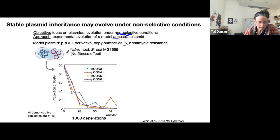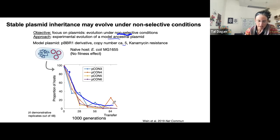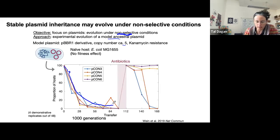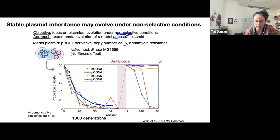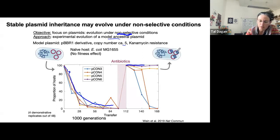We evolved it under non-selective conditions for plasmid presence; nonetheless, the plasmid was unstable and its frequency in the population was decreasing. But then when the PhD student back then, Tana Wine, exposed the population to antibiotics — selecting for plasmid presence — and then continued under non-selective conditions, we could see several plasmid variants that evolved stability: they were present continuously in 100% of hosts and were not lost anymore. When we sequenced the plasmid we observed a small segmental duplication in the plasmid genome that apparently made it stable.